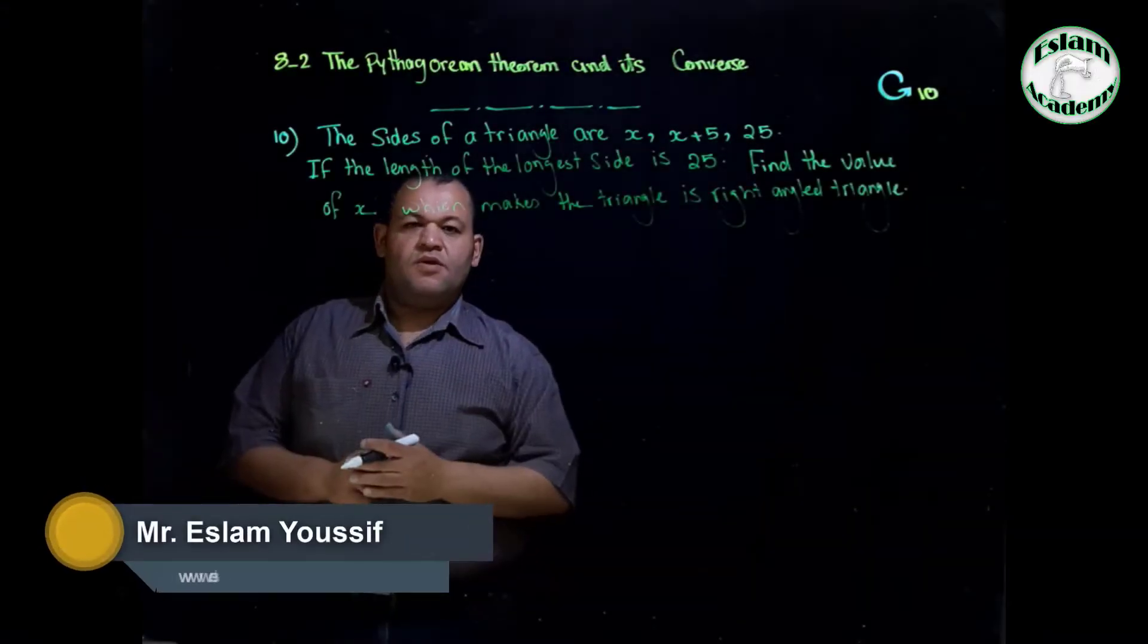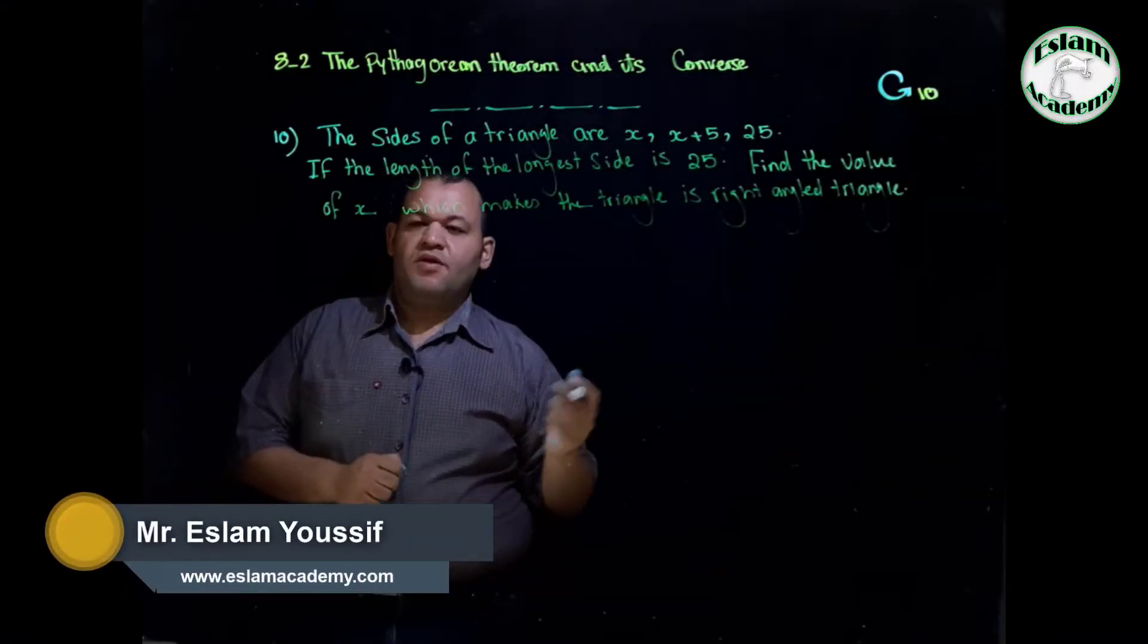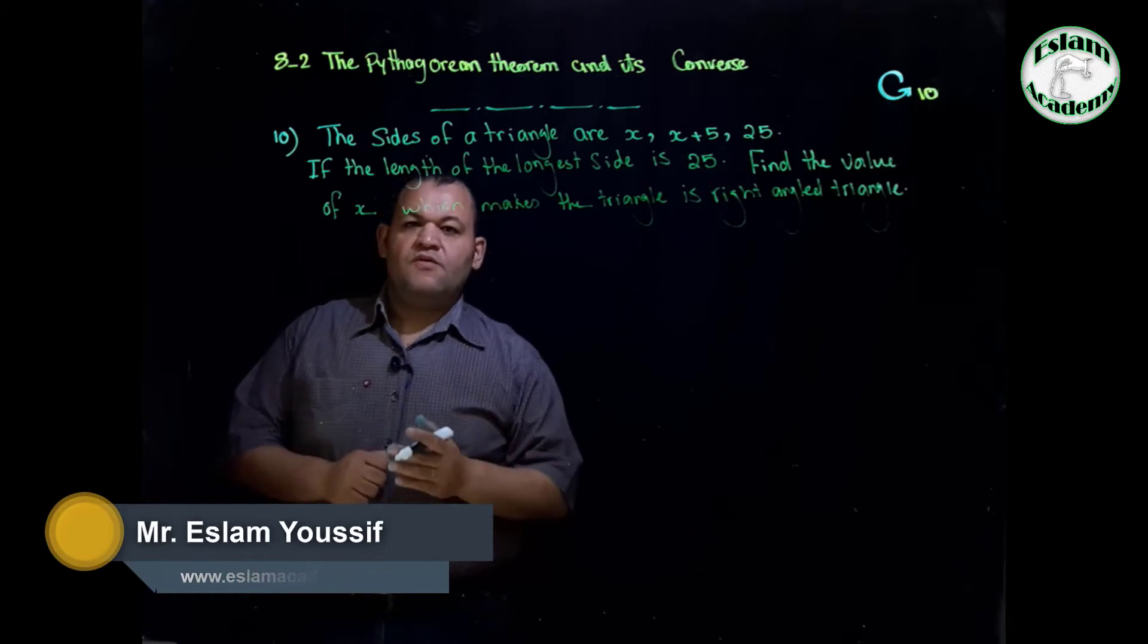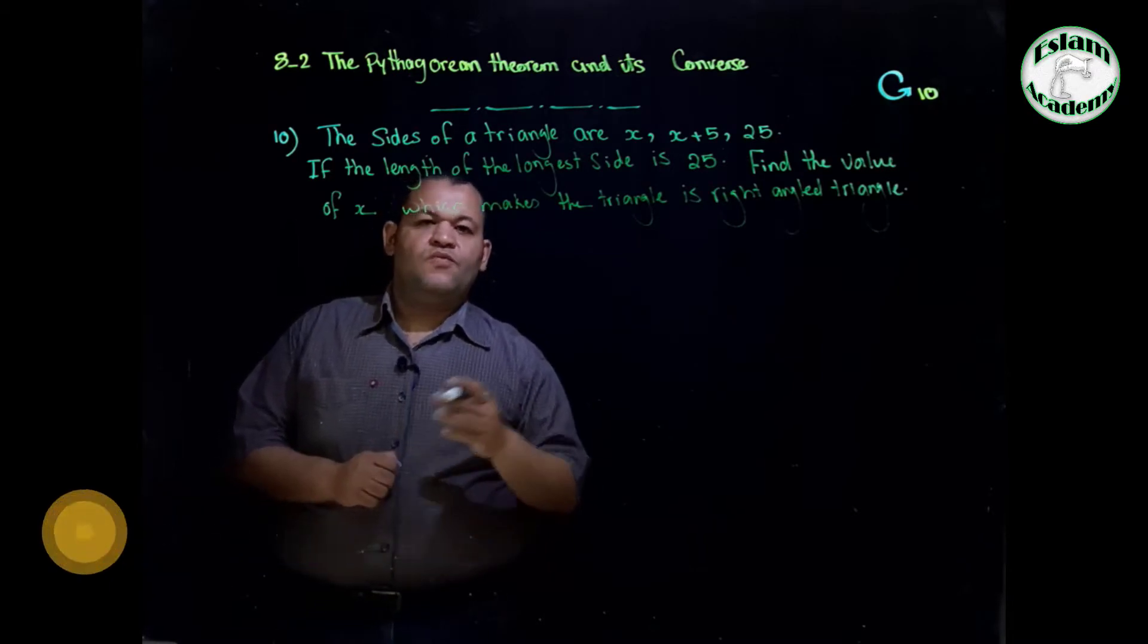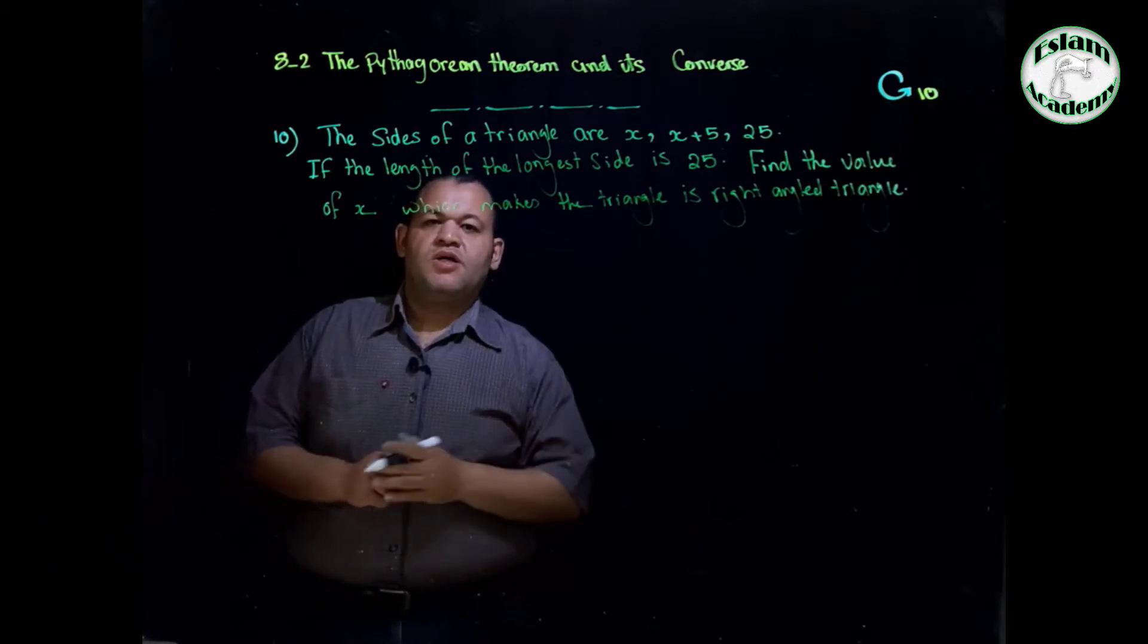Question number 10. The side lengths of the triangle are x, x plus 5, and 25. The longest side of the triangle is 25. We need to find the value of x which makes the triangle a right angle triangle.